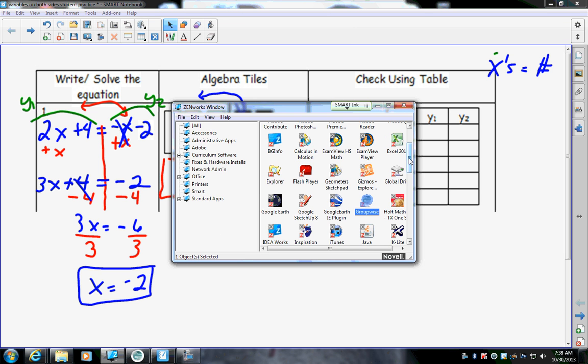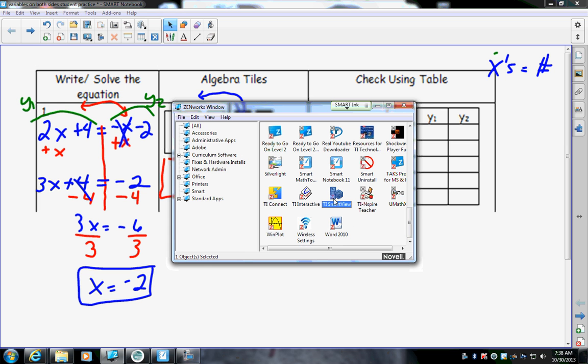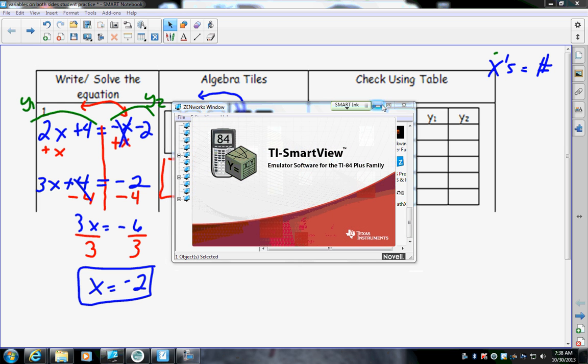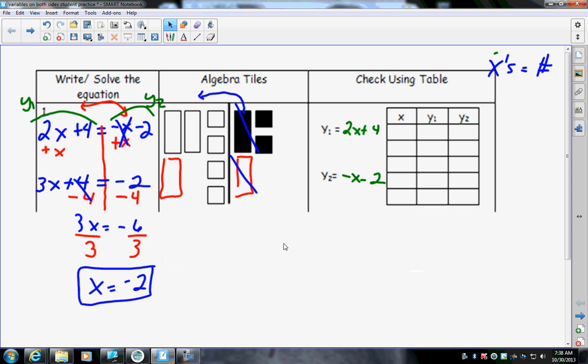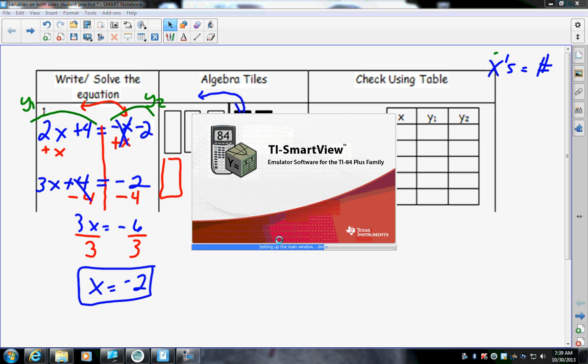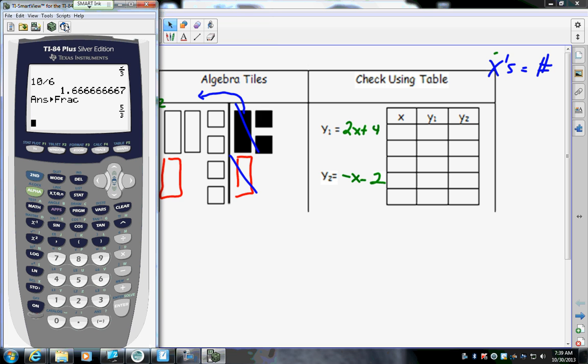Now, to know what goes into Y1 and Y2, the left-hand side goes into Y1. So, in Y1 is 2X plus 4, and the right-hand side goes into Y2, which is negative X minus 2. So then, everybody should have their calculators. There we go. Okay, so you go into Y equals, put in there 2X plus 4, and into Y2, negative X minus 2. And I'm going to press second graph.